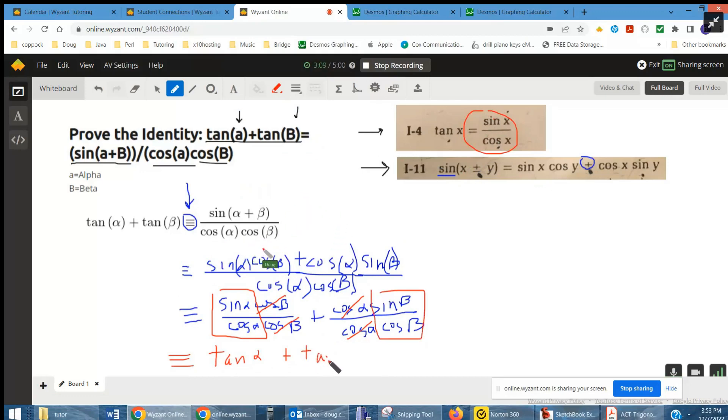And at that point, we can say QED—we're done proving the identity. There you go. Hope that helped. If you have any questions, post a comment.